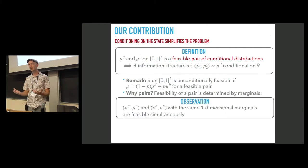So these distributions on the unit square have the same one-dimensional projections. Then these two pairs are feasible simultaneously, which means that if we start from a pair that is feasible, any other pair that has the same marginals is also feasible.